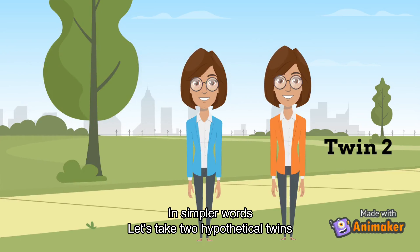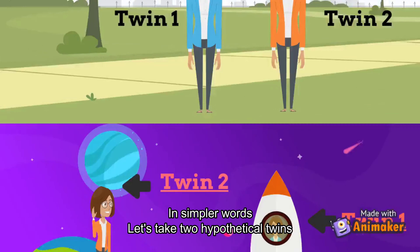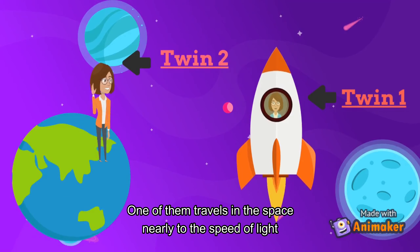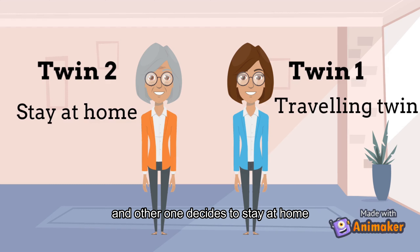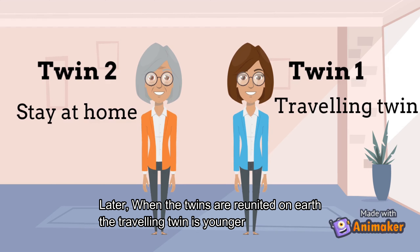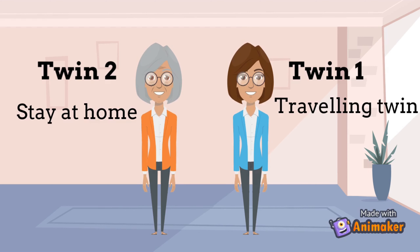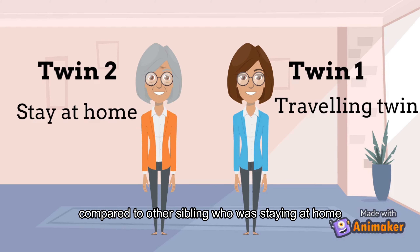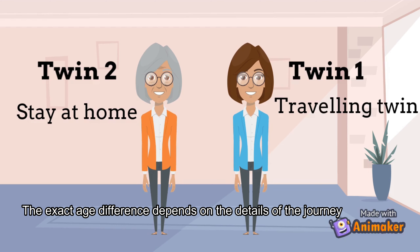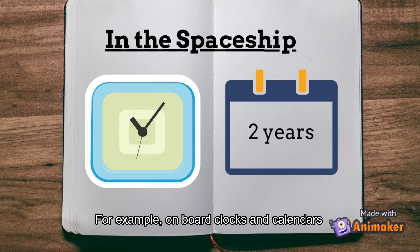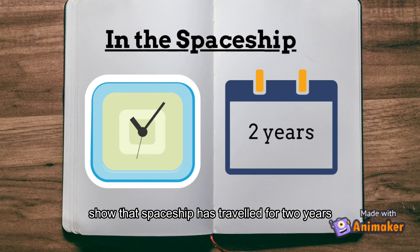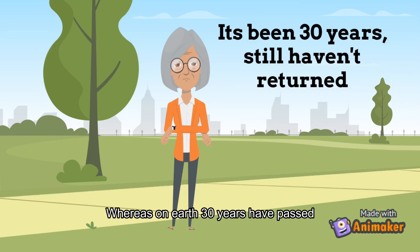In simpler words, let's take two hypothetical twins. One of them travels in space near to the speed of light, and the other one decides to stay at home. Later, when the twins are reunited on Earth, the travelling twin is younger compared to the sibling who stayed at home. The exact age difference depends on the details of the journey. For example, on board, clocks and calendars show the spaceship has travelled for two years, whereas on Earth, 30 years have passed.